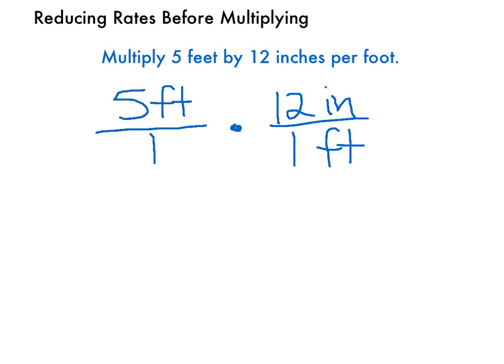And then we identify the units that appear above and below the division lines, in this case feet. We can cancel those out. And now our problem is 5 times 12 inches, which is 60 inches.